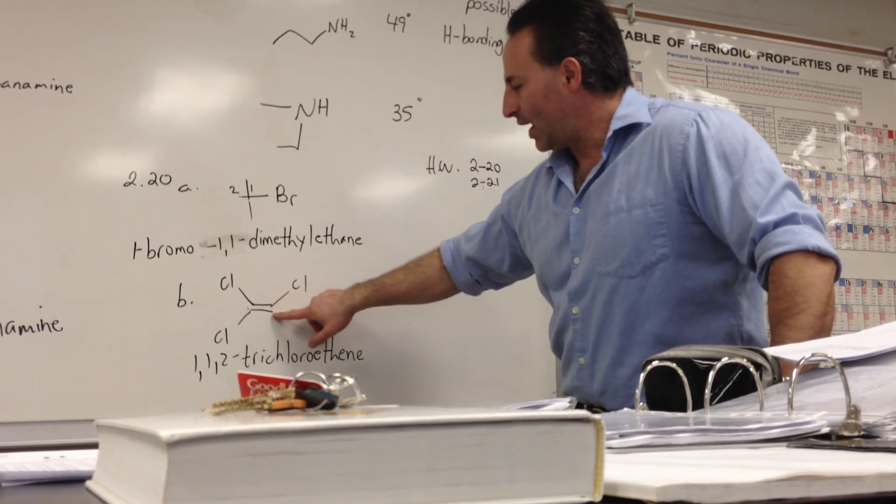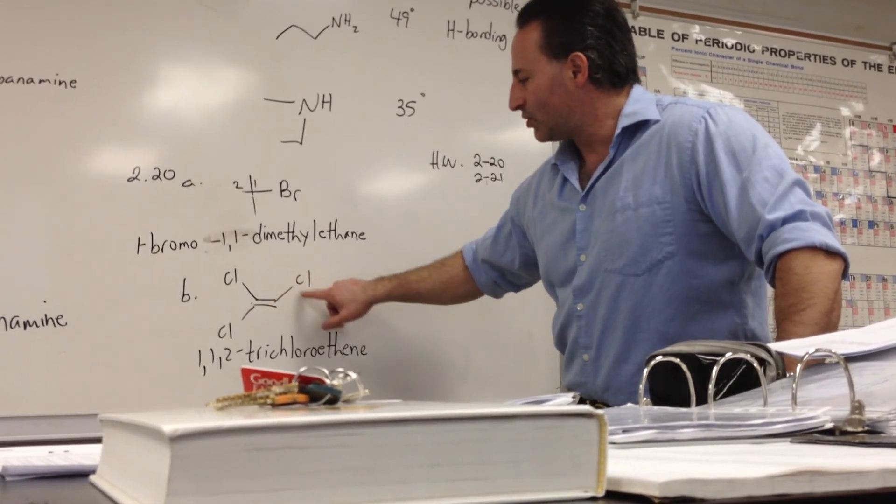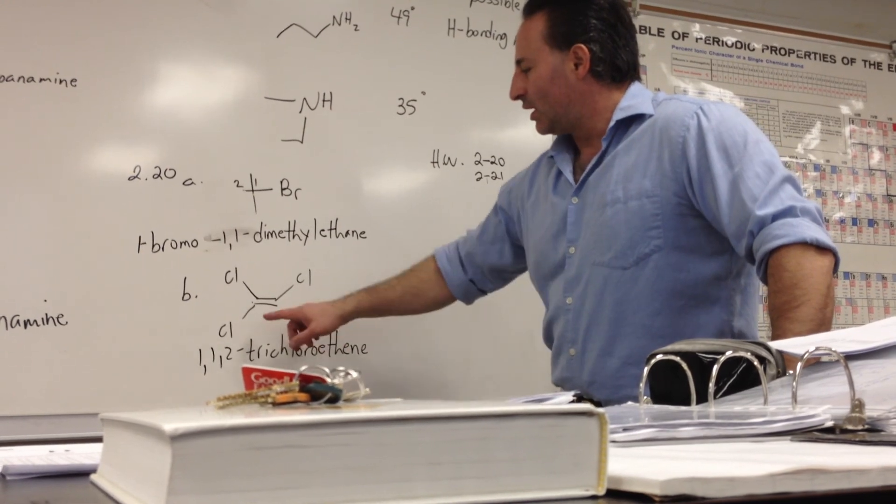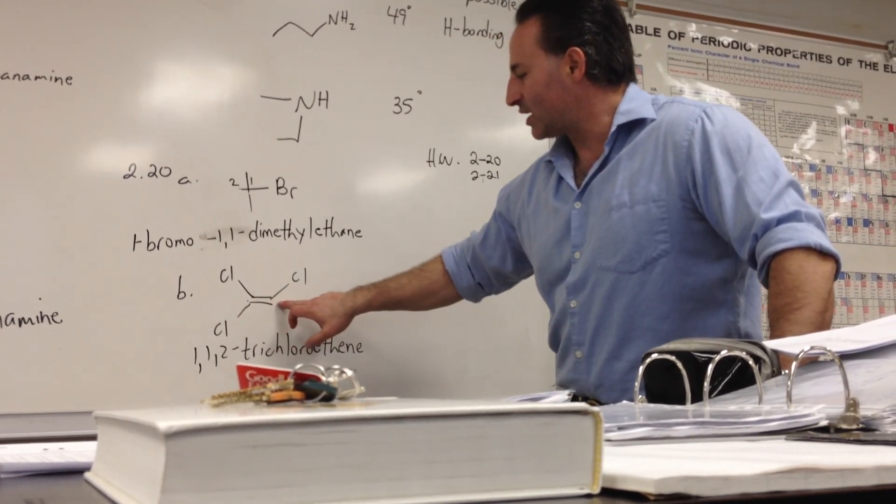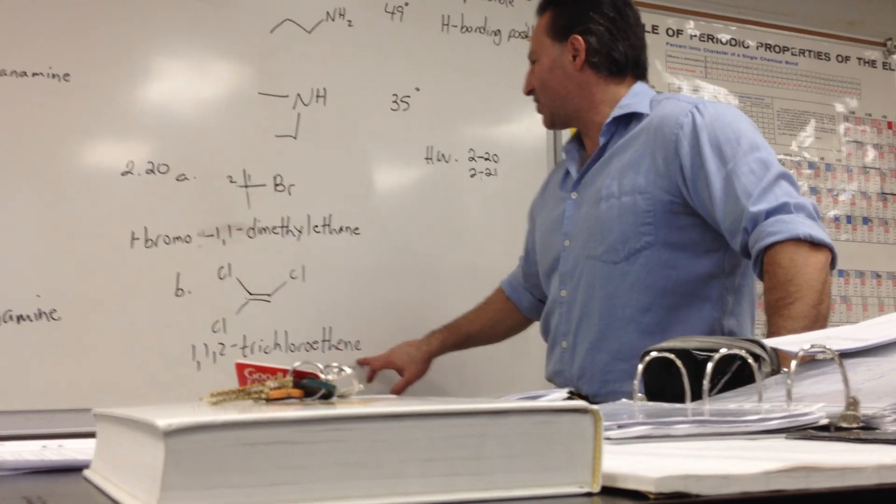This is an ethene with three chlorine atoms. Two at the first position, one at the second position. So we'd say 1,1,2-trichloroethene.